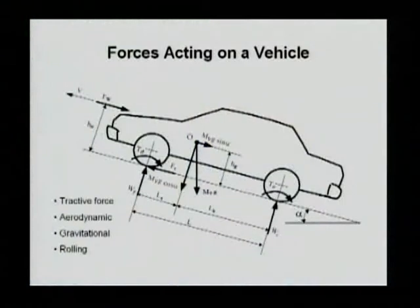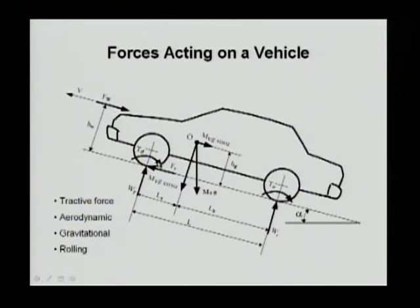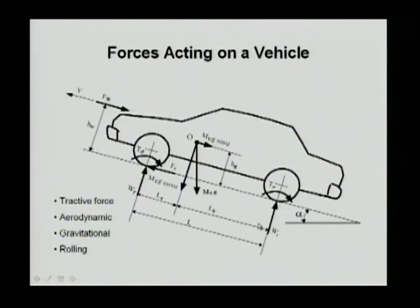If we look at the model of a vehicle, there are four different forces applied on the vehicle. The chart shows a quarter vehicle model where the weight of the vehicle is equivalent on one of the four wheels. There's a traction force that moves the vehicle, an aerodynamic force that is a resistance, a gravitational resistance, and a rolling resistance.